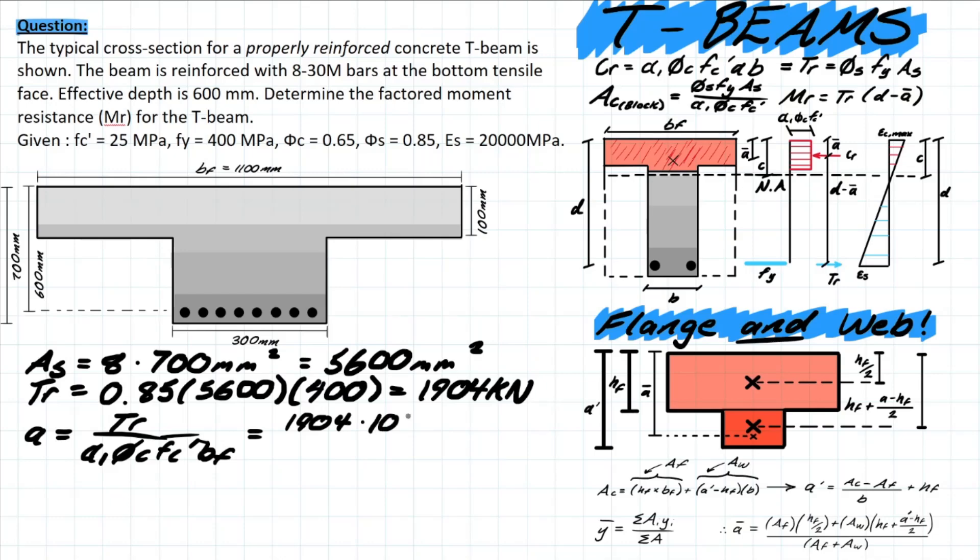So let's plug in our values and see if that's actually the case. We have 1904 times 10³ newtons, and this is all over 0.8 times 0.65 times our compressive strength 25 MPa times the b value which is bf 1100 millimeters. All this is going to cancel out and leave you with a millimeter value where a is equal to 133 millimeters.